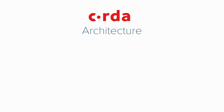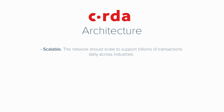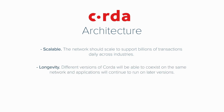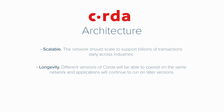Taking a look now at Corda's architecture. Corda is scalable — the network should scale to support billions of transactions daily across industries. Longevity: different versions of Corda will be able to coexist on the same network and applications will continue to run on later versions. Interoperable: the platform is designed to allow multiple applications to coexist and interoperate on the same network.